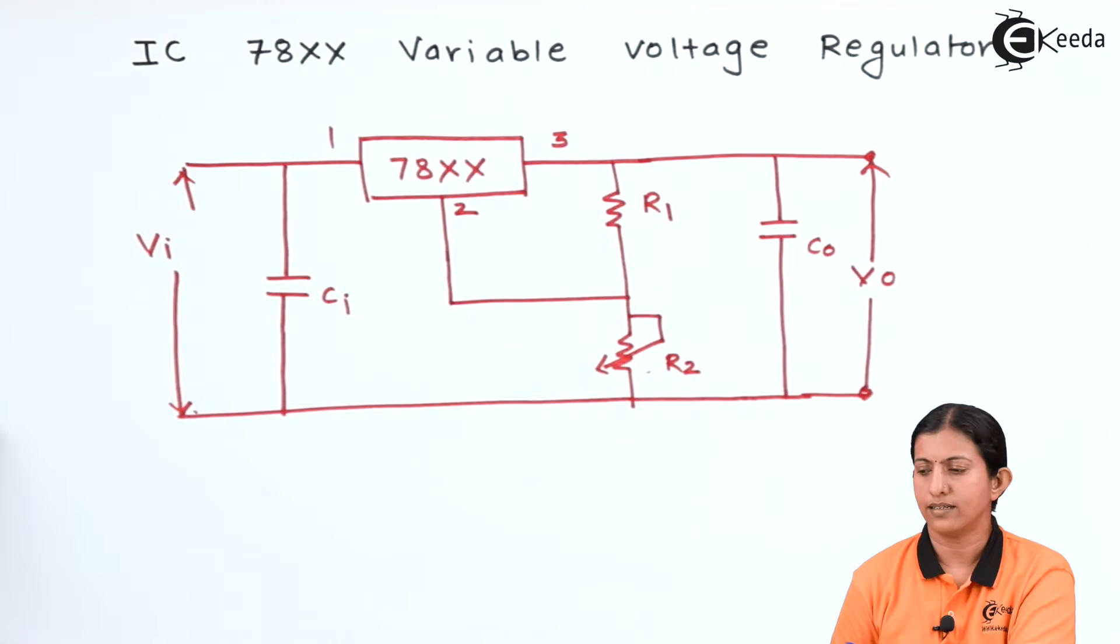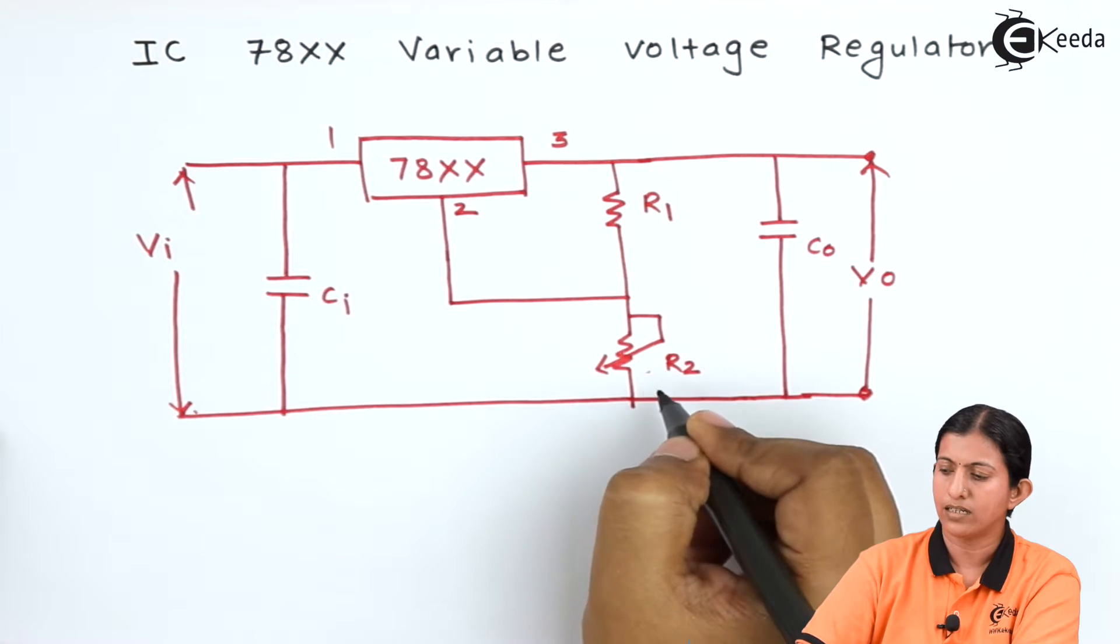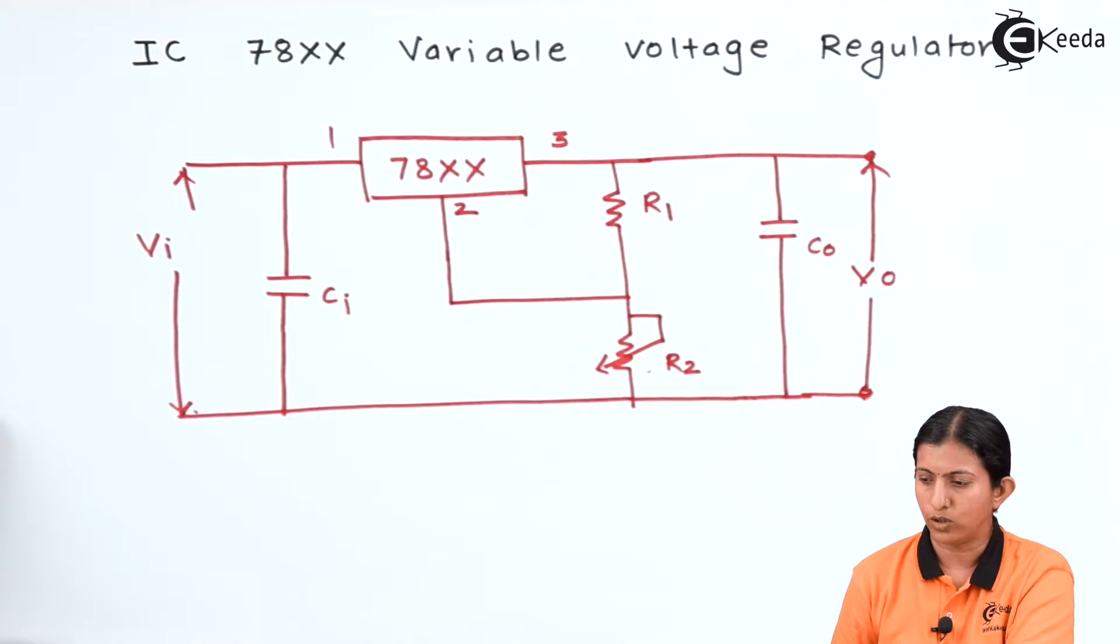I am using this 78XX as a variable IC regulator. We are connecting one more resistor, a variable resistor named R2.